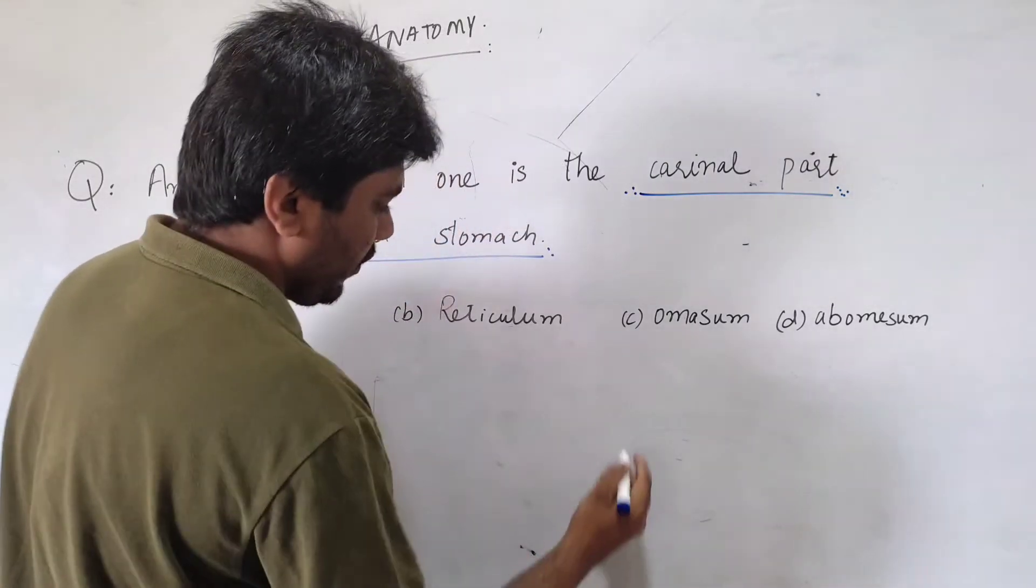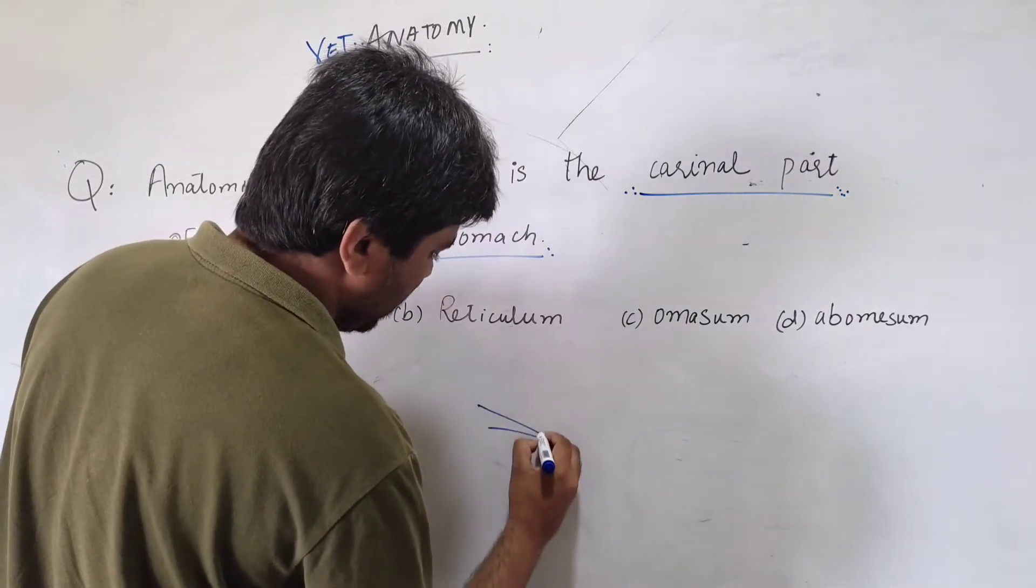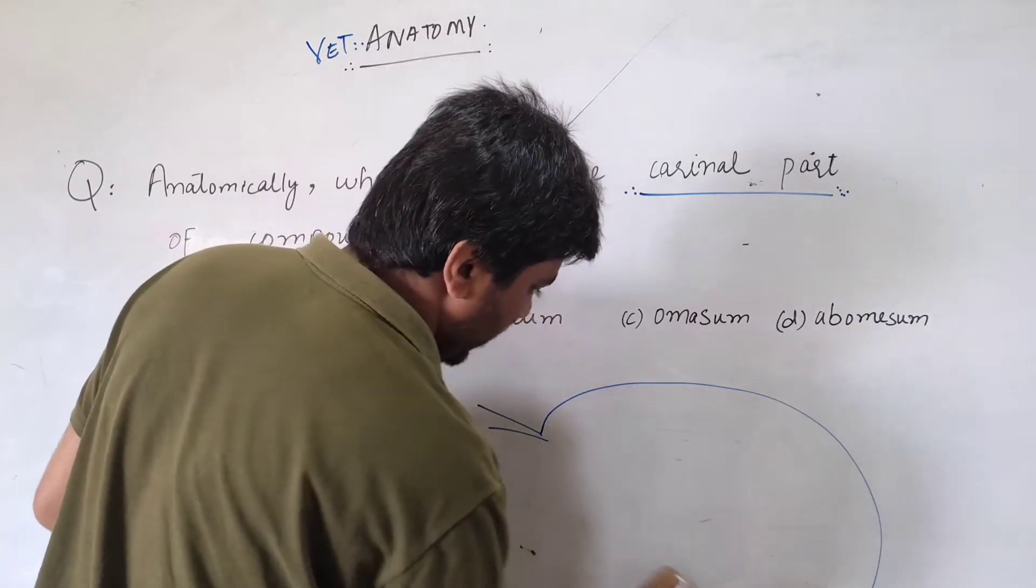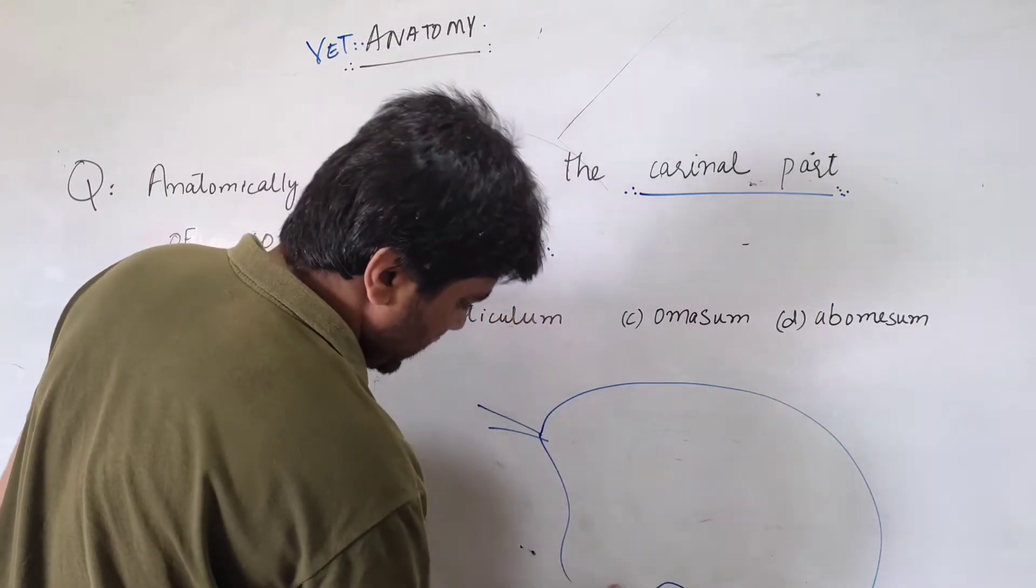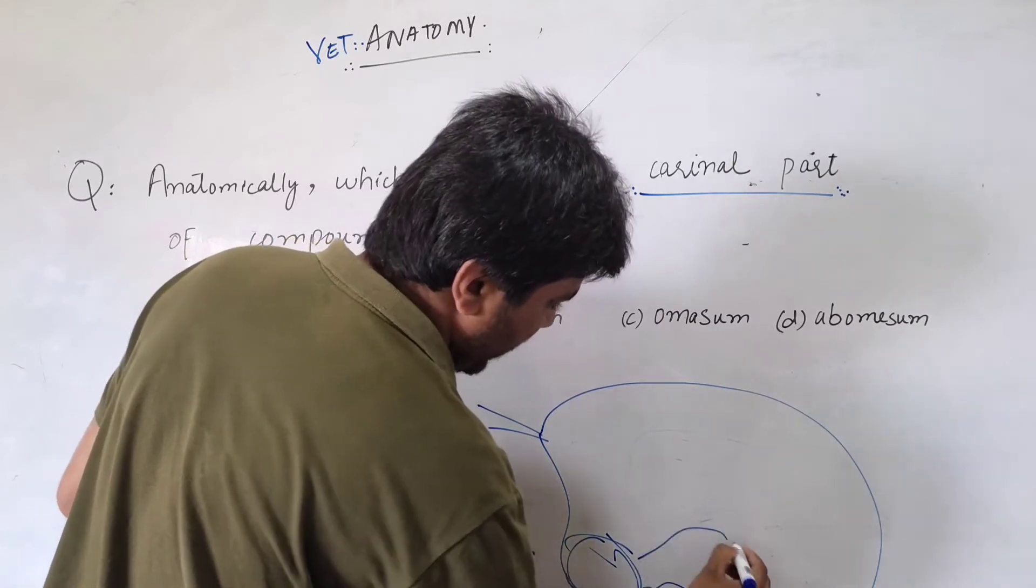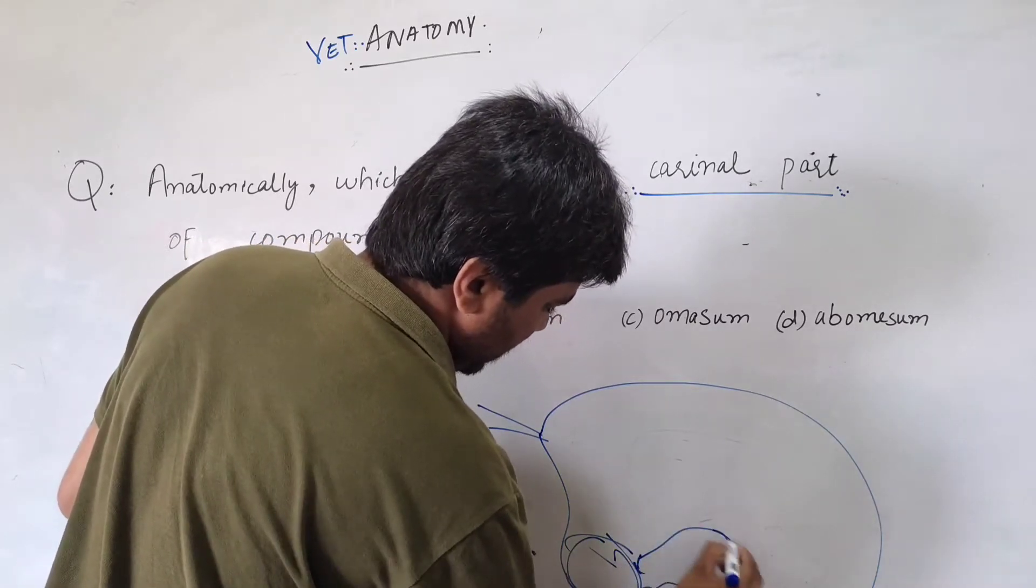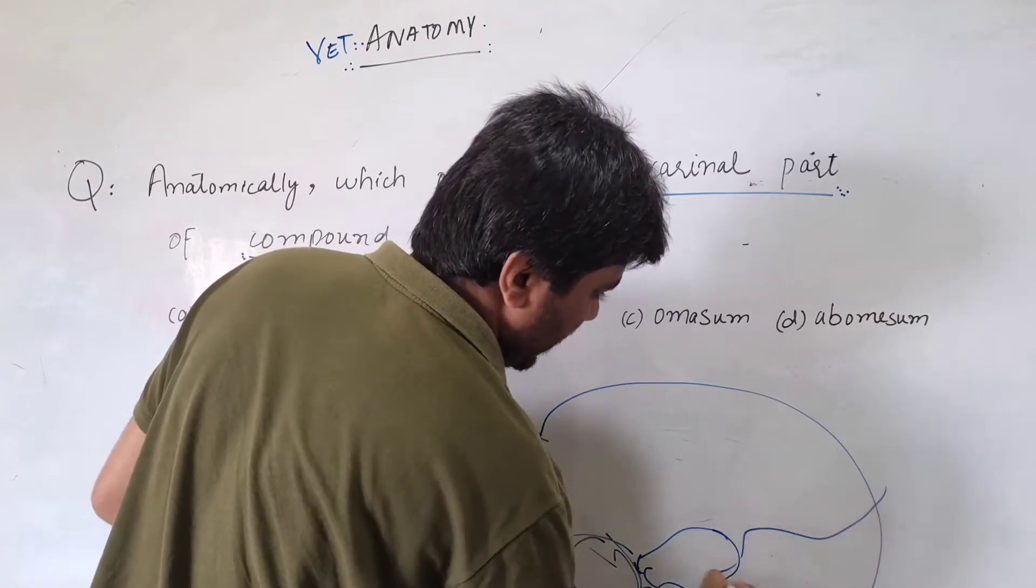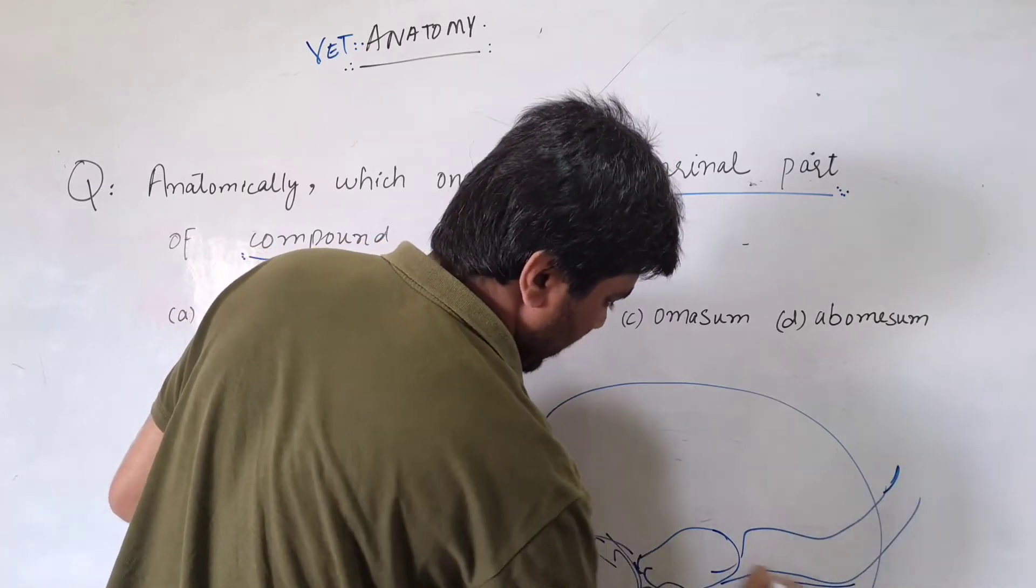So structurally, if you look on the left side you have a large rumen, a small reticulum here, then we have omasum and finally abomasum, for example.